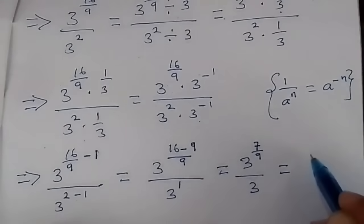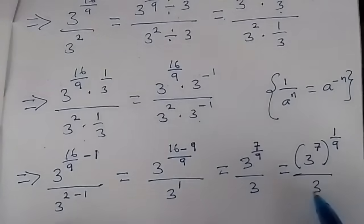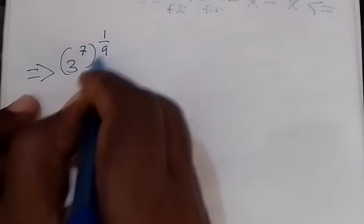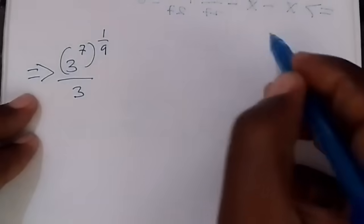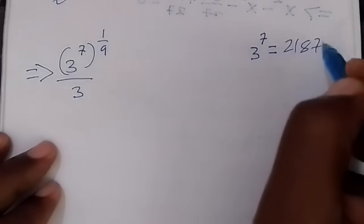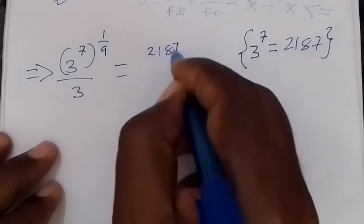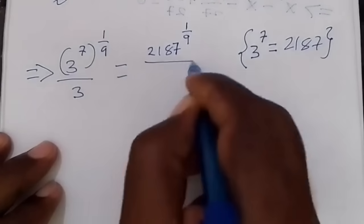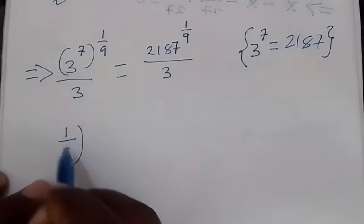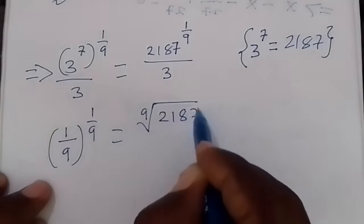This is the same as 3 raised to power 7, the whole raised to 1 over 9, over 3. Now, 3 raised to power 7 equals 2187. Therefore this becomes the 9th root of 2187 over 3. Which means that 1 over 9, raised to 1 over 9, equals the 9th root of 2187 over 3.